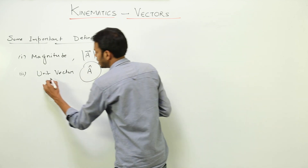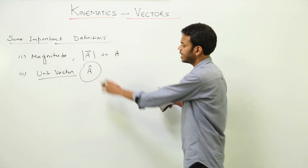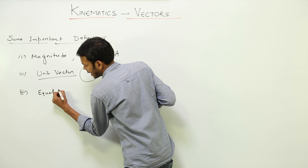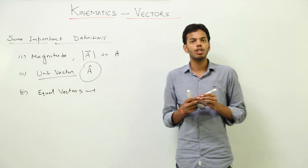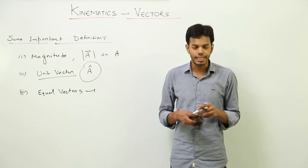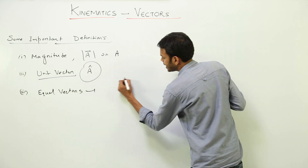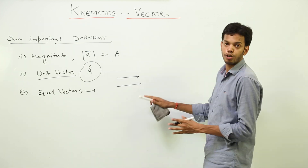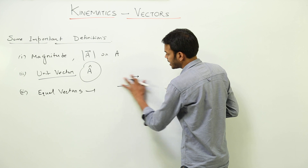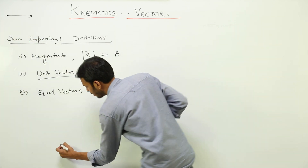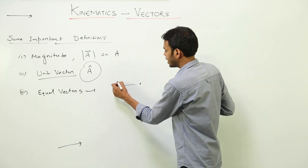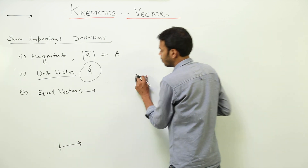Number three is equal vectors. A vector comprises two things — magnitude and direction. For two vectors to be equal, both must be equal: same magnitude and same direction. This is irrespective of where the vector is placed. These two vectors are equal if they have the same length and the same direction.